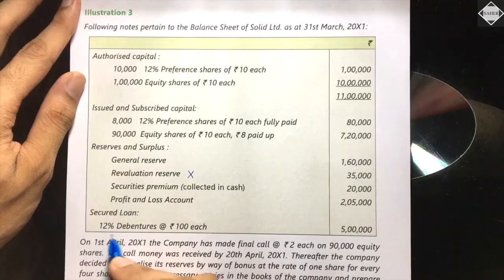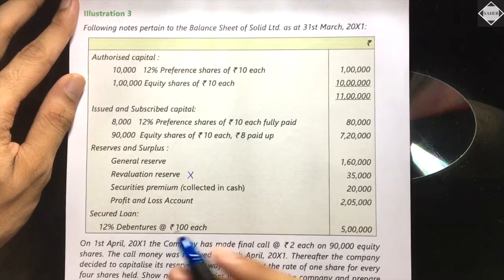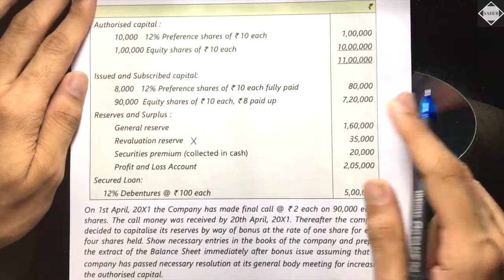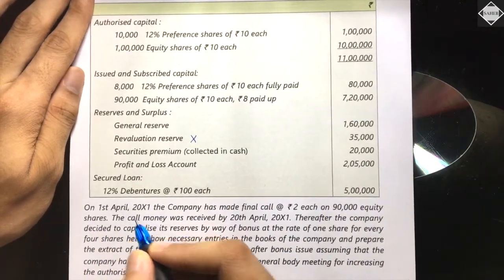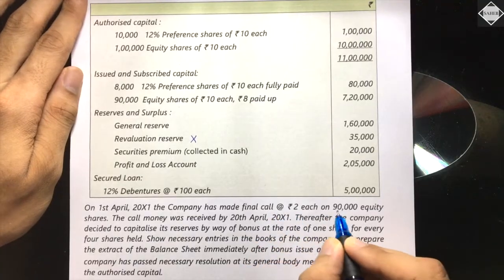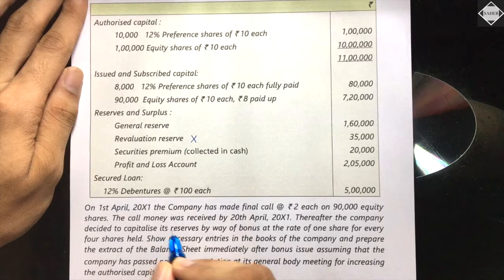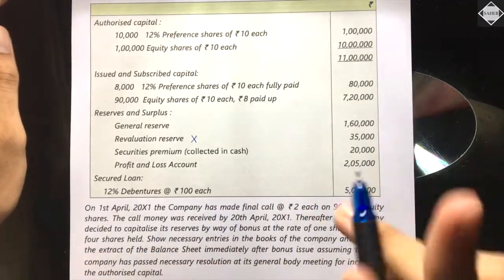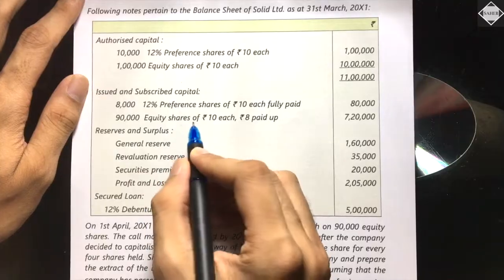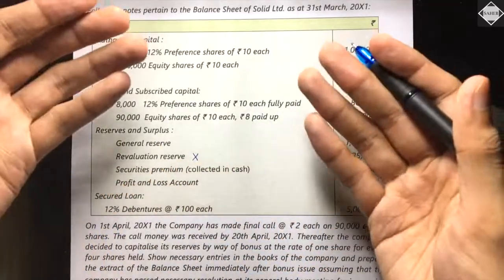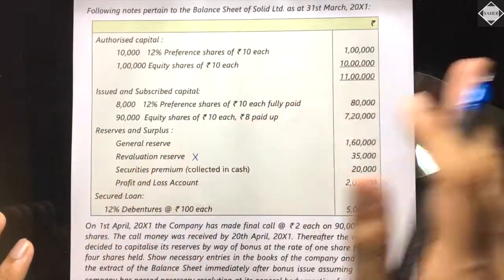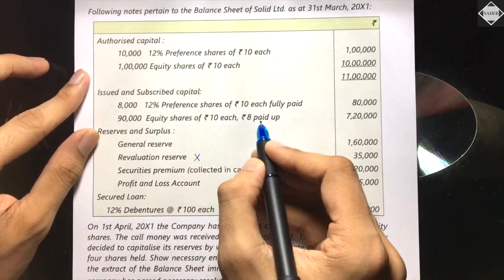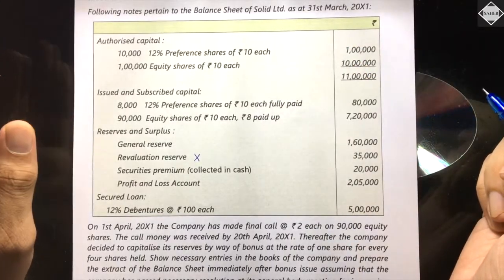There is also a secured loan: 12% debentures at ₹100 each, which remains as is — not relevant to the bonus issue. In the additional information: on 1st April 2021, the company made a final call of ₹2 each on 90,000 equity shares, and the call money was received by 20th April 2021. From this you can understand the company made the equity shares fully paid up by the conventional way — making the final call and receiving the money. No bonus call was made.